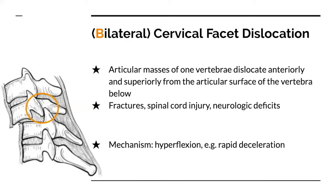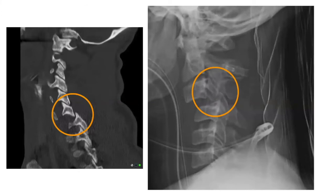Bilateral cervical facet dislocation: the dislocated articular masses move up and forward of the superior process of the vertebra below — the inferior facet comes anterior to the superior facet of the underlying vertebra. This injury is usually associated with nearby fractures as well as significant spinal cord injury, because the spinal cord itself can sublux. Neuro deficits can result because the intervertebral foramen where the nerves exit can be compromised. The mechanism is hyperflexion, as in rapid deceleration in a motor vehicle accident. This is considered unstable due to complete disruption of all ligaments at the level of injury. Examples are shown on CT and X-ray.